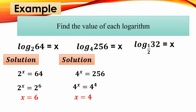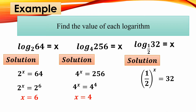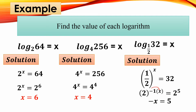Another example: log base (1/2) of 32 equals x. Transform to exponential form: (1/2) raised to x equals 32. Find the common base — the common base is 2. Reciprocate 1/2 to get 2 raised to negative 1, so it becomes 2 raised to negative x equals 2 raised to 5. Equate the exponents: negative x equals 5. Divide both sides by negative 1, giving x equals negative 5.